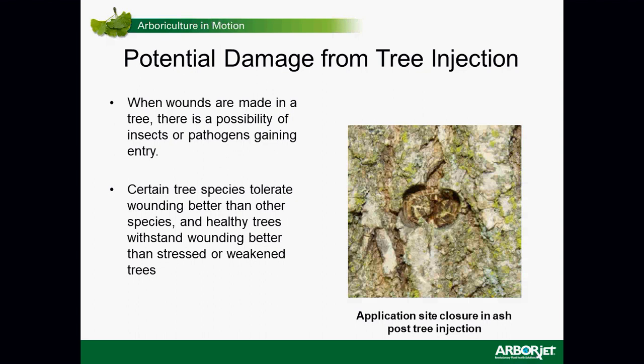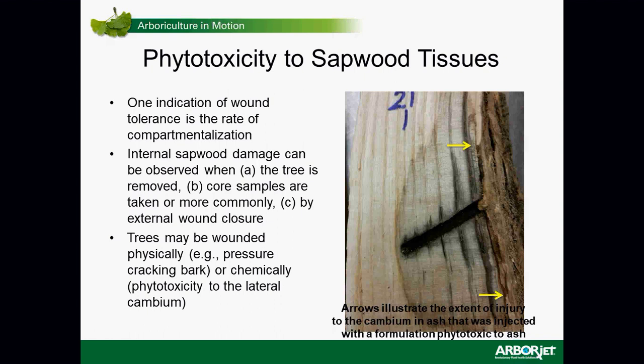Whenever you drill into trees, you create a wound, and there's always a potential for unwanted things to happen — like insects or pathogens gaining entry into the bole of the tree. Certain trees tolerate that well, which is partly under genetic control and partly dependent on the health of the tree and its growing environment. We recommend a proactive approach: the healthier the tree, the better the outcome. One indication of wound tolerance is the rate of compartmentalization.